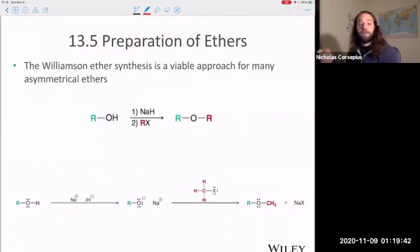If we want to create an asymmetrical ether, there's this special synthesis procedure called a Williamson ether synthesis. So this is where we would take an alcohol, the whole idea being that our blue R is different from our red R in this reaction. So we take some alcohol, we mix it with sodium hydride.